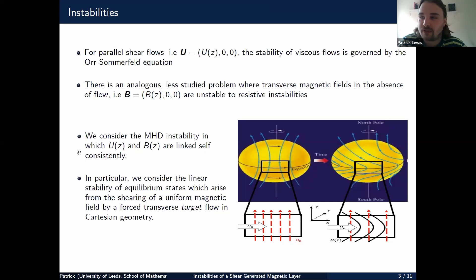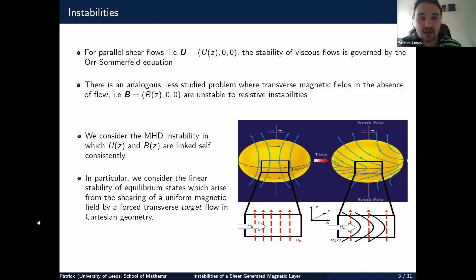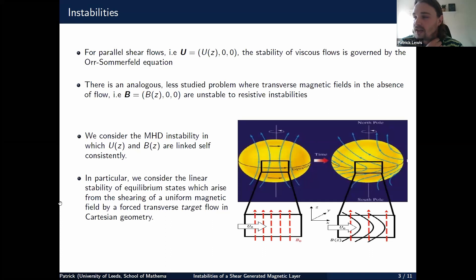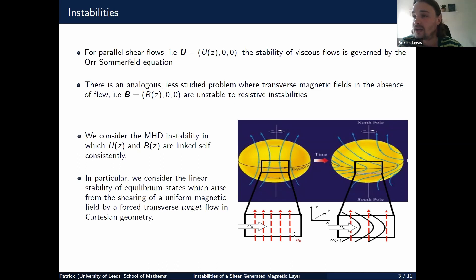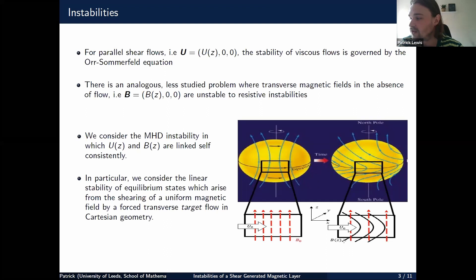For parallel shear flows, where you've got flow in the x-direction which varies vertically, the stability of viscous flows is governed by the Orr-Sommerfeld equation. There is an analogous similar problem where we consider a transverse magnetic field in the absence of flow, which can be unstable to resistive instabilities. We consider an MHD instability where UZ and BZ are linked self-consistently. In particular, we consider the linear stability of an equilibrium which arises from the shearing of a uniform magnetic field by a forced transverse target flow in Cartesian geometry.